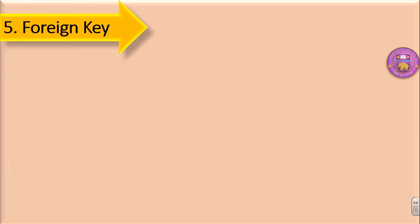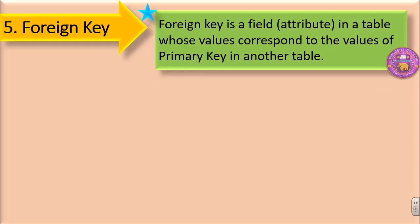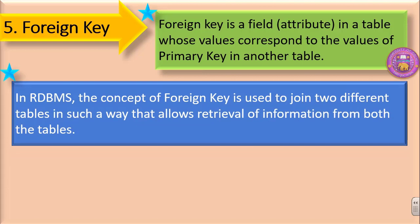The next one is foreign key. A foreign key is a field or attribute in a table whose values correspond to the values of the primary key in another table. In simple words, if a particular field is a primary key in one table but that field is also present in a second table, then in the second table we call that field a foreign key. In RDBMS, the concept of foreign key is used to join two different tables in a way that allows retrieval of information from both tables.